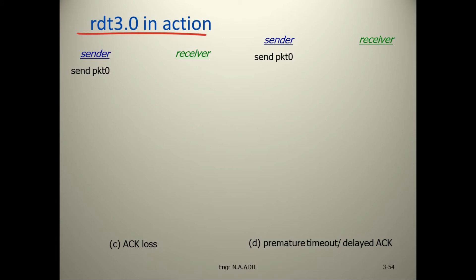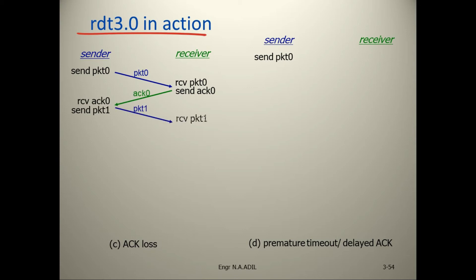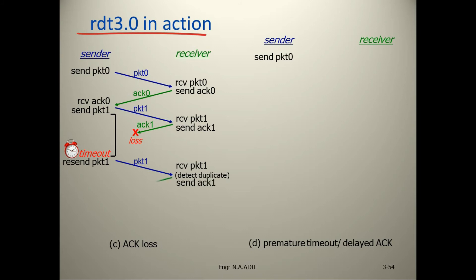Acknowledgement loss scenario: sender sends packet 0, receiver receives packet 0 and sends acknowledgement 0. Receiver then receives packet 1 and sends acknowledgement 1, but the acknowledgement is lost. So timeout occurs and the sender resends packet number 1. Receiver receives packet 1 but detects a duplicate, and sends acknowledgement 1 again. The sender then sends packet 0, receiver receives packet 0 and sends acknowledgement 0.